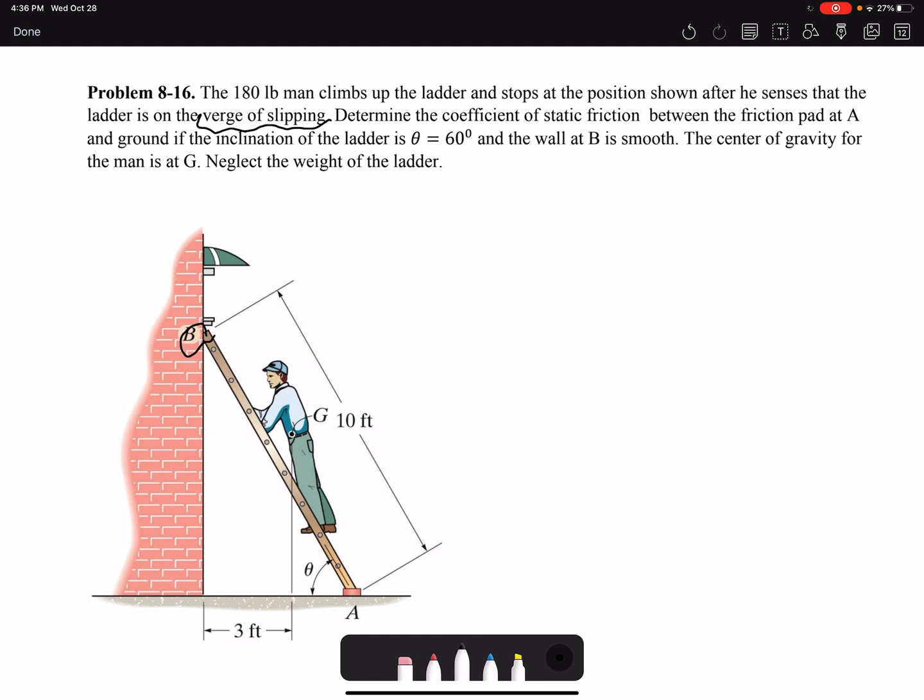Whenever we use the word smooth, that means there is no friction. So we have friction at A but no friction at B. The center of gravity for the man is at G. Neglect the weight of the ladder.